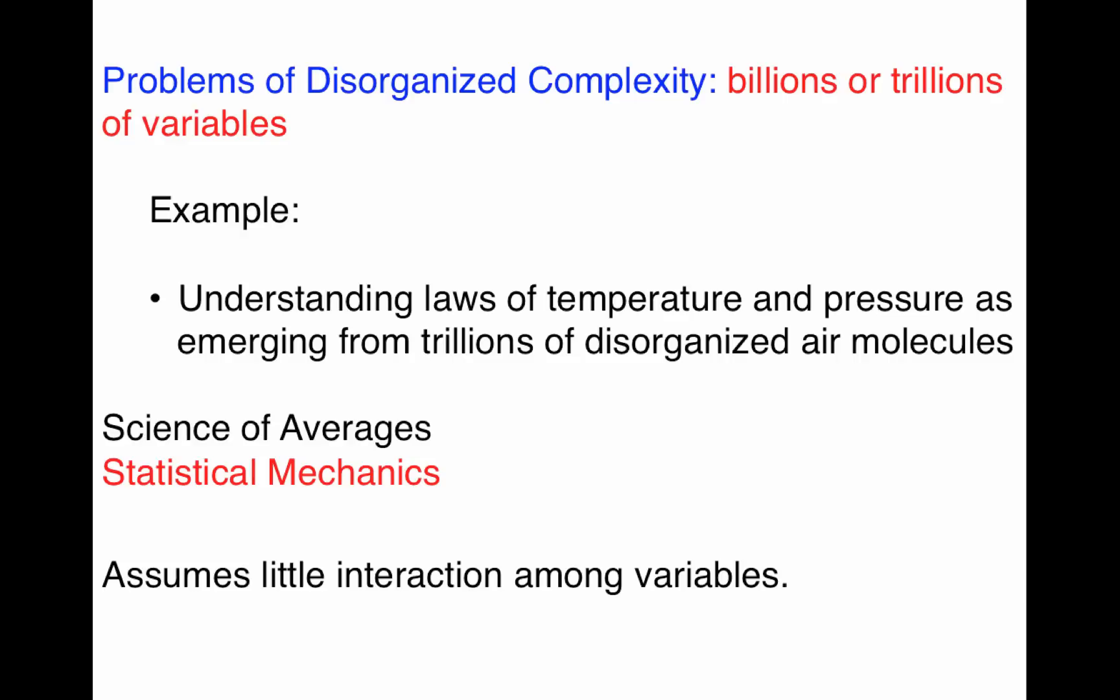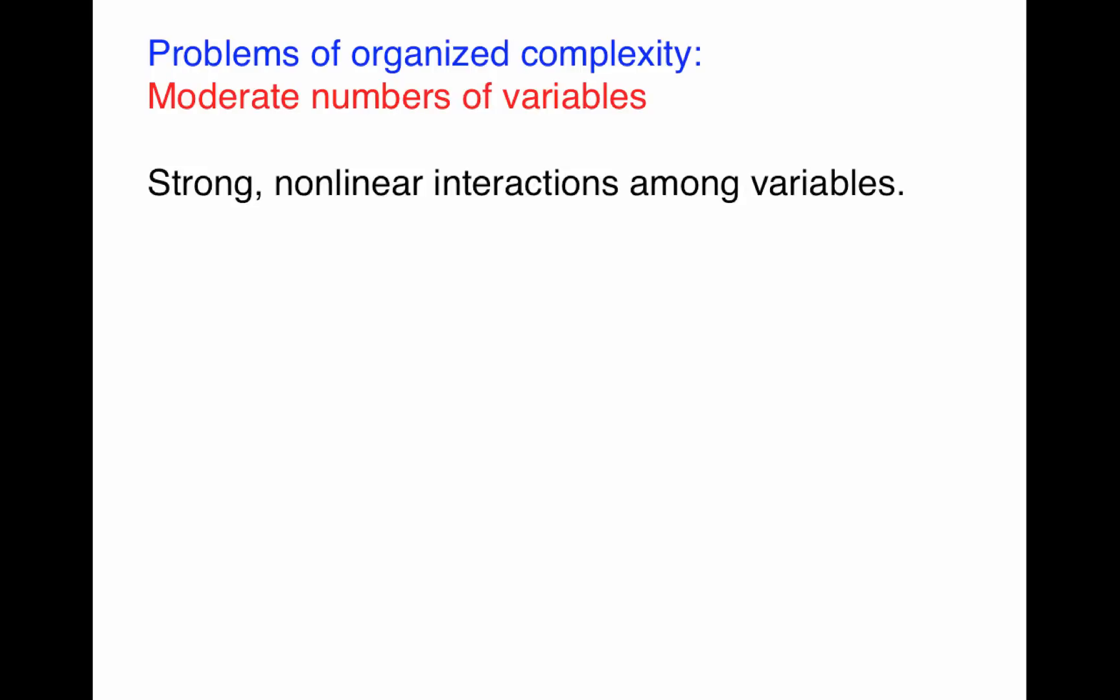Weaver's last category was the problems of organized complexity. These are the problems that include the examples I gave earlier, the problems of interest to complex systems researchers. These are problems that involve a moderate to large number of variables. But the key here is that, due to their strong, nonlinear interactions, the variables cannot be meaningfully averaged.